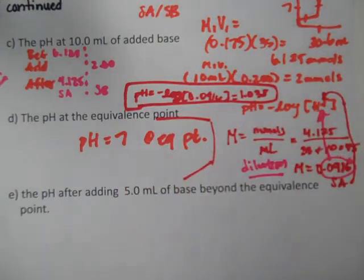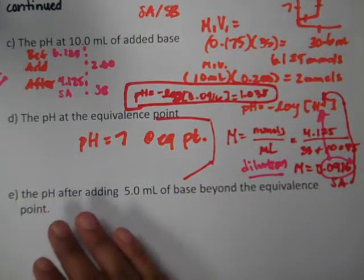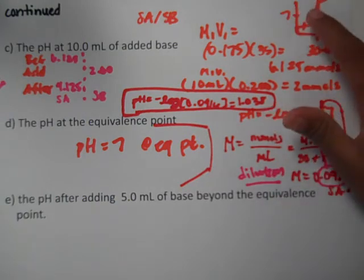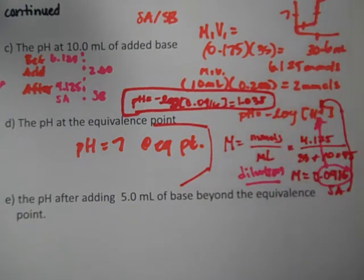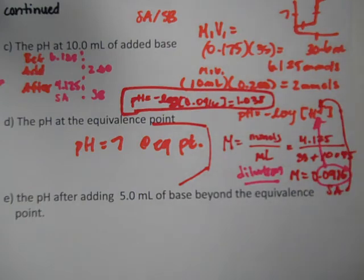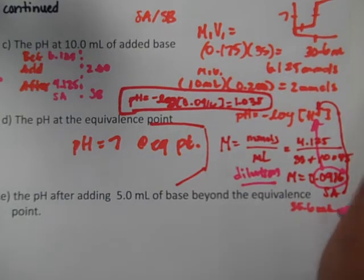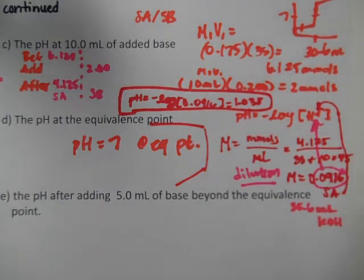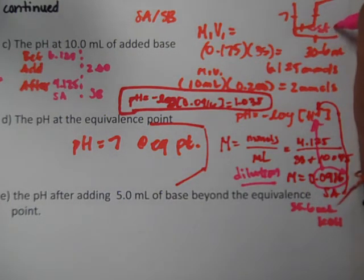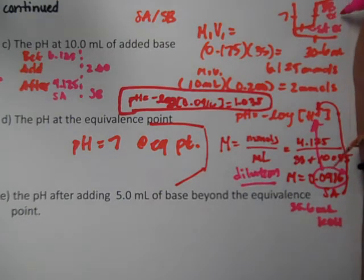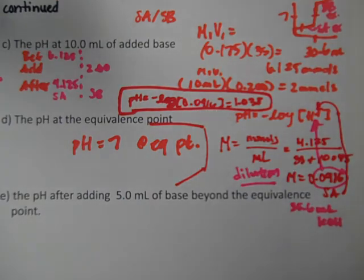We already did the equivalence point. pH is 7. Now they want us to find after 5 milliliters beyond the equivalence point. So if we look back to the graph, we already did 10 milliliters. This is 30.6. So 5 milliliters after is going to be 35.6 milliliters of total volume, of the base added, of KOH. So 5 milliliters after, what kind of problem are we doing? Here it's, we're left with a strong acid in excess. This is strong base in excess because all the acid has been eaten away after the equivalence point.